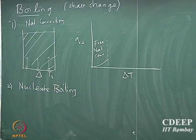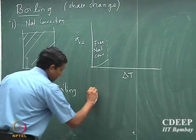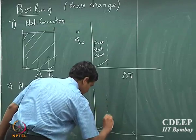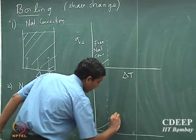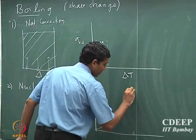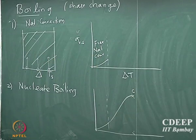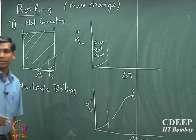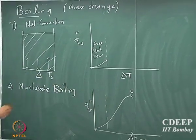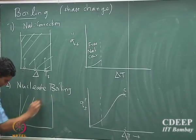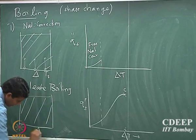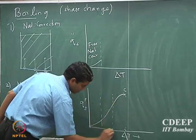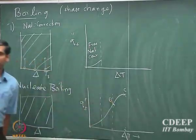Nucleate boiling actually has two regions. Free convection extends to this point, all the way up to the maximum. If I call this maxima C — this is delta T versus the flux of heat supplied for boiling — what happens is the fluid is present and I have a heating system below. Till a certain point there will be an inflection point of this curve.